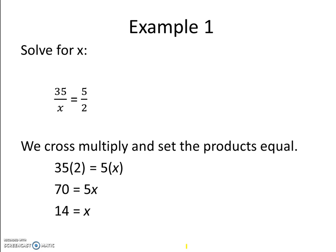Our first example is to solve for x. We have 35 divided by x equals 5 divided by 2. We cross multiply and we have 35 times 2, which is 70,